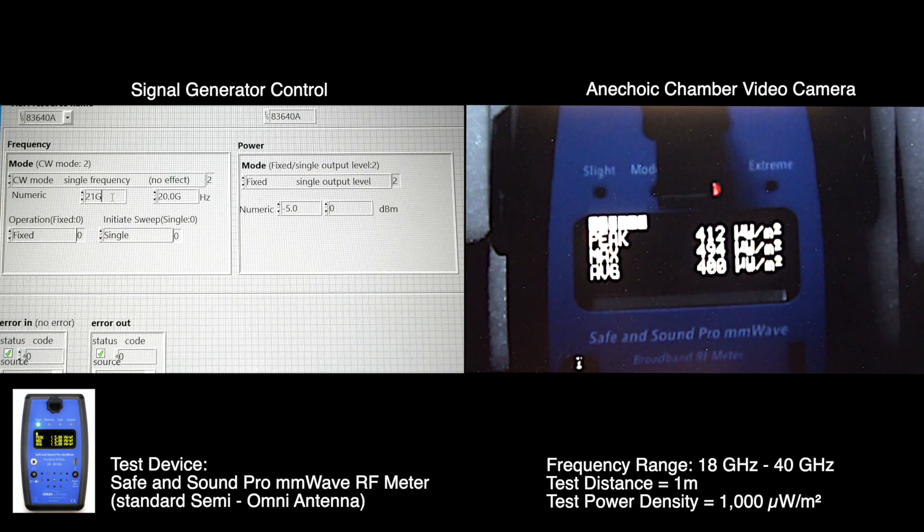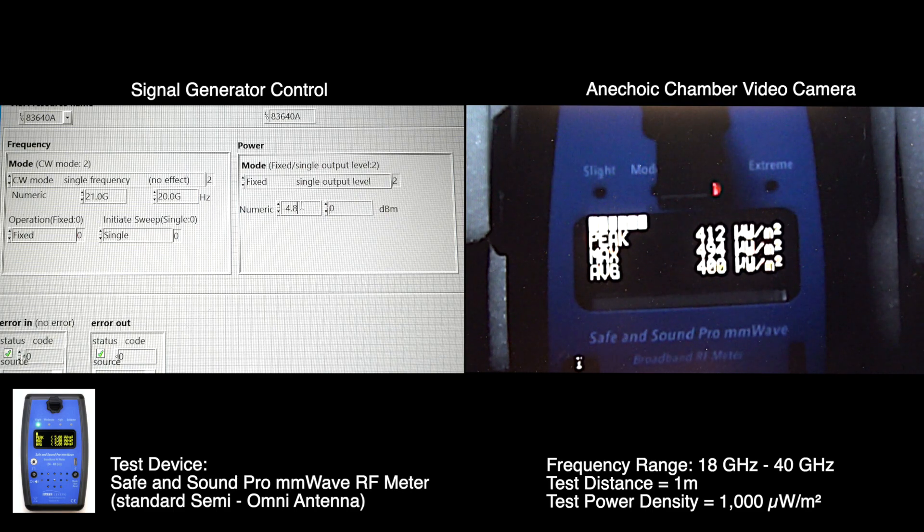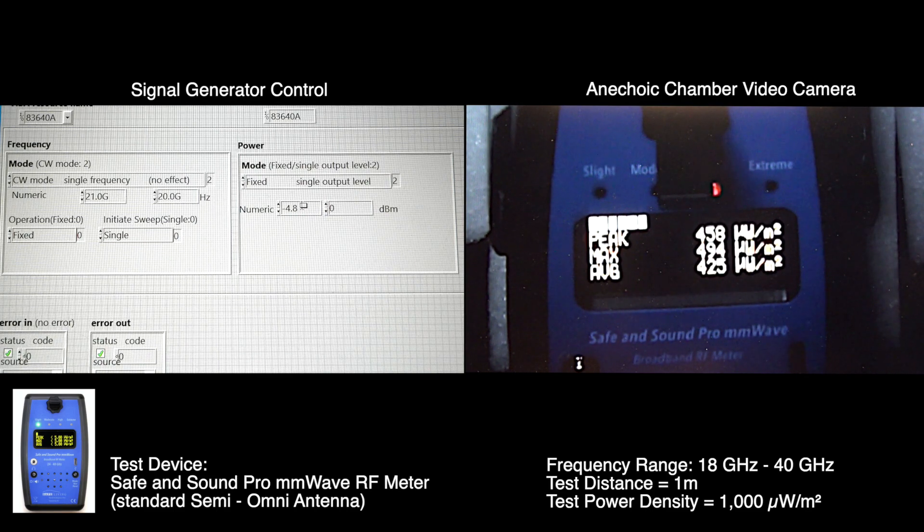So 21 gigahertz. This is around the same minus 4.8 dBm. 444 microwatts per square meter.